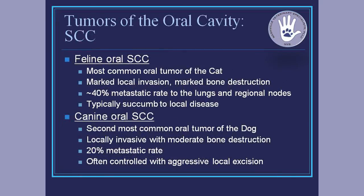Moving forward, that covers the most common tumor in the dog. When we look at cats, it's going to be oral squamous cell carcinoma — the most common tumor in a cat, and second most common in a dog. They behave very differently. An oral squamous cell in a dog is locally invasive but has moderate bone destruction, with a very low metastatic rate of 15 to 20%. These are often caught at an earlier stage and controlled with aggressive surgery — removing the tumor and associated bone — and those dogs can do very well without adjunctive chemo.